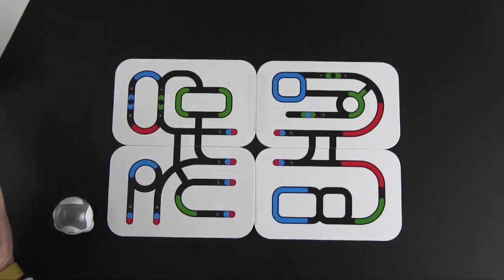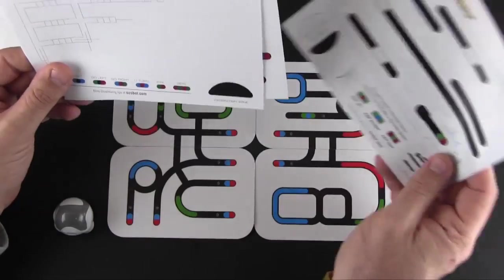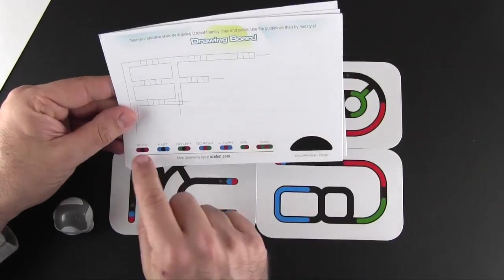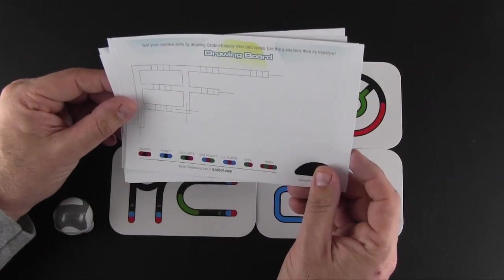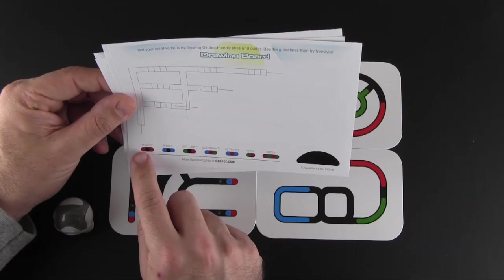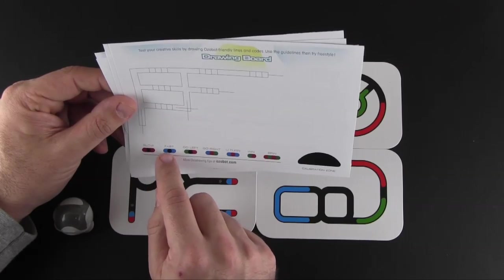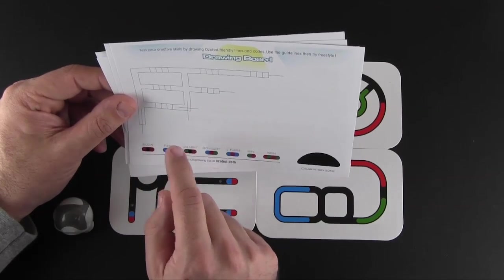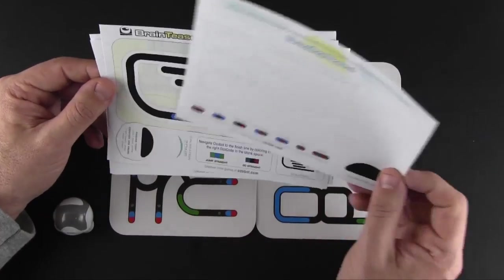And if you look on these cards that come with it, here are some of the colored codes that instruct the OZOBOT what to do. So you can see there's a red line with a black dot to tell it to go fast or slow, a blue line with a black dot to tell it to go fast left, right, turn, etc. And you can create your own tracks which I'll show you in a second.